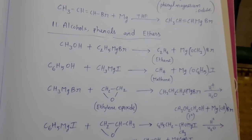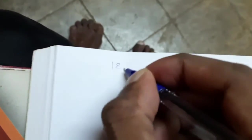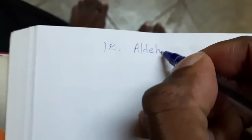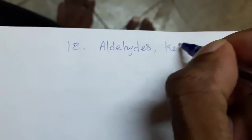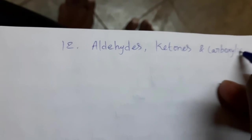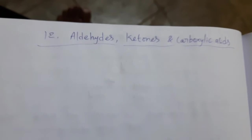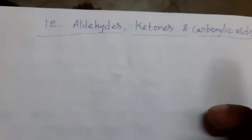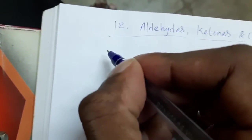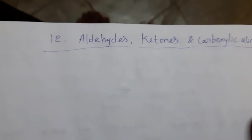These are the reactions of Grignard reagents studied in Chapter 11. Now moving to Chapter 12: Aldehydes, Ketones and Carboxylic Acids. In this chapter, we study that aldehydes react with Grignard reagents to form primary and secondary alcohols, whereas ketones react with Grignard reagents to form tertiary alcohols.